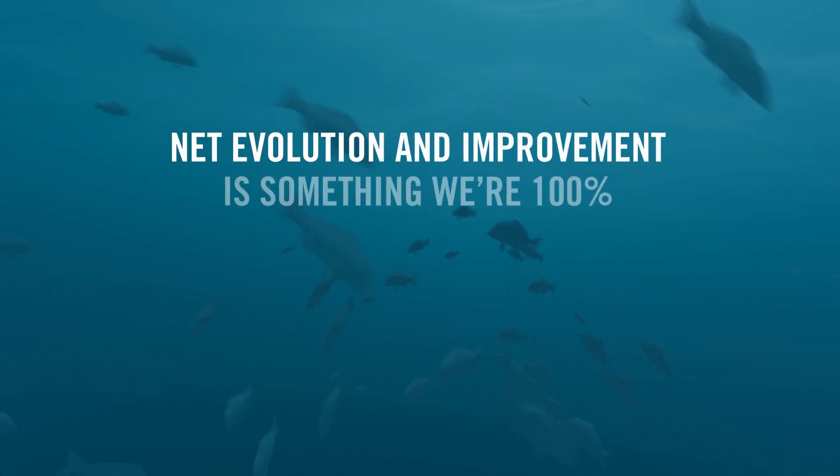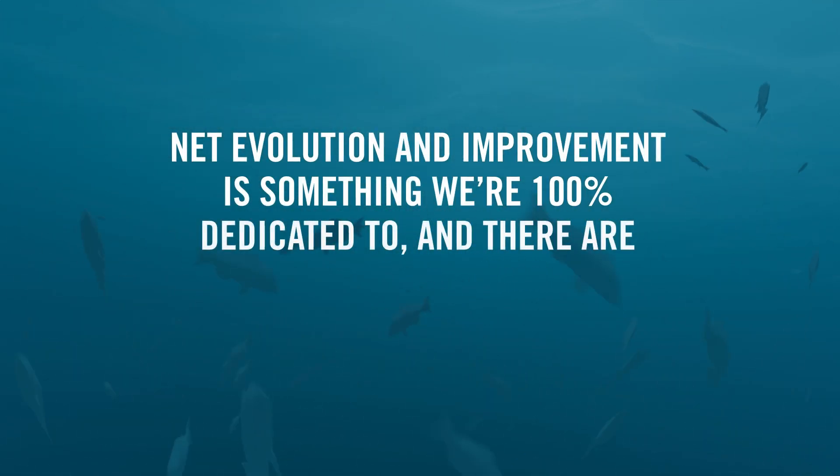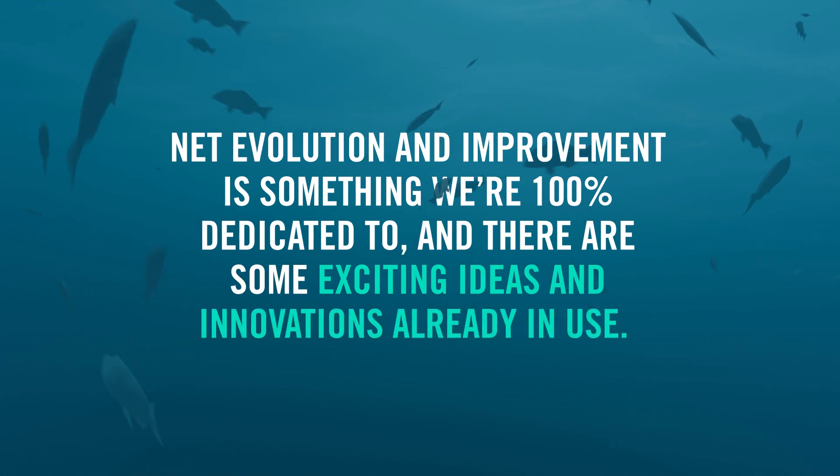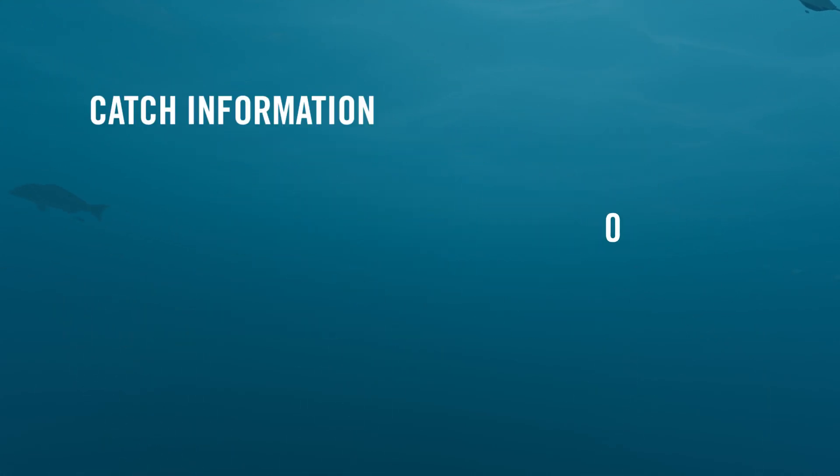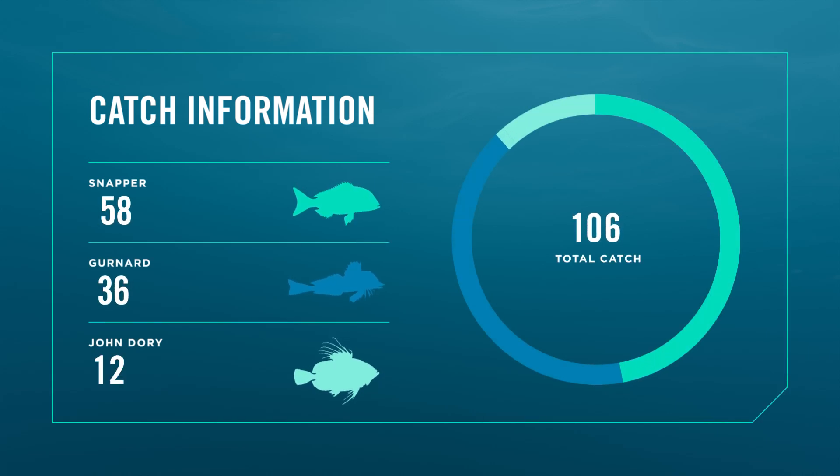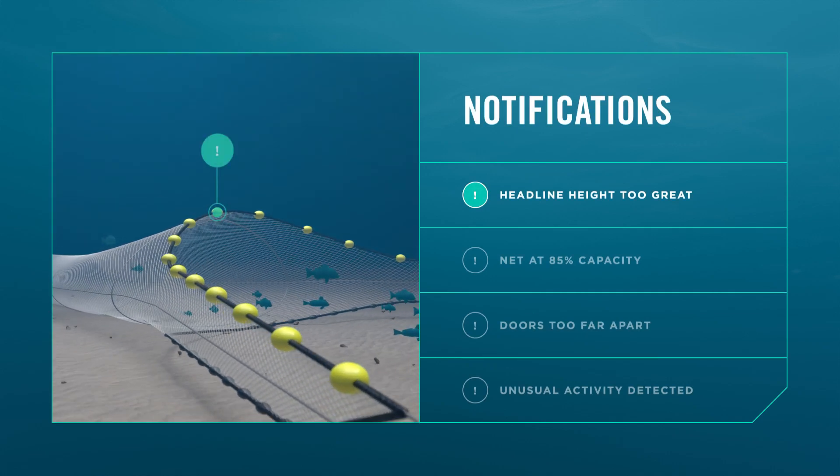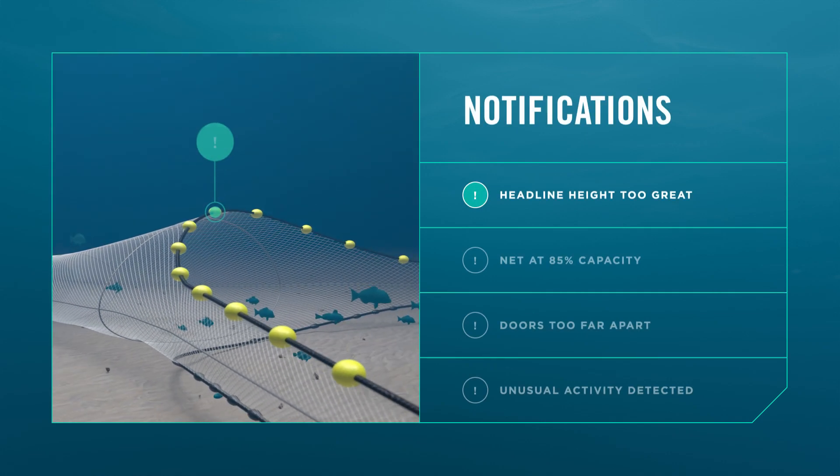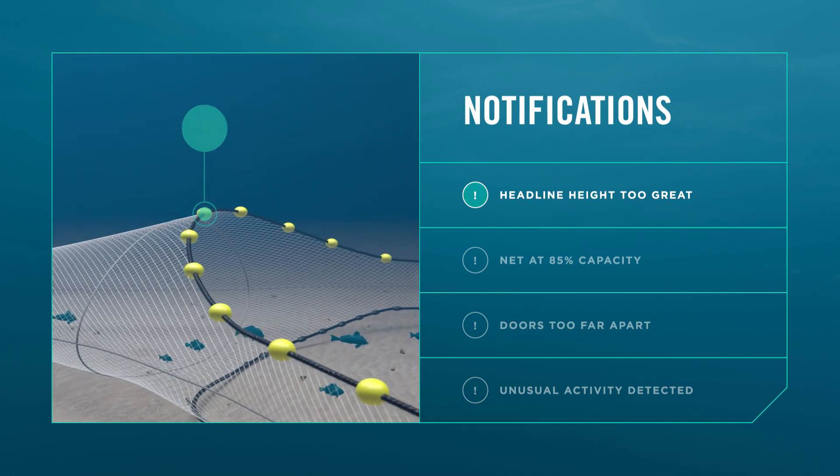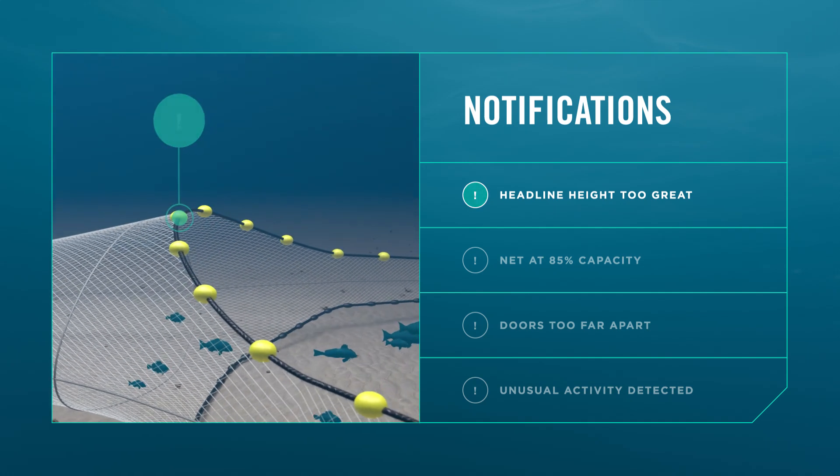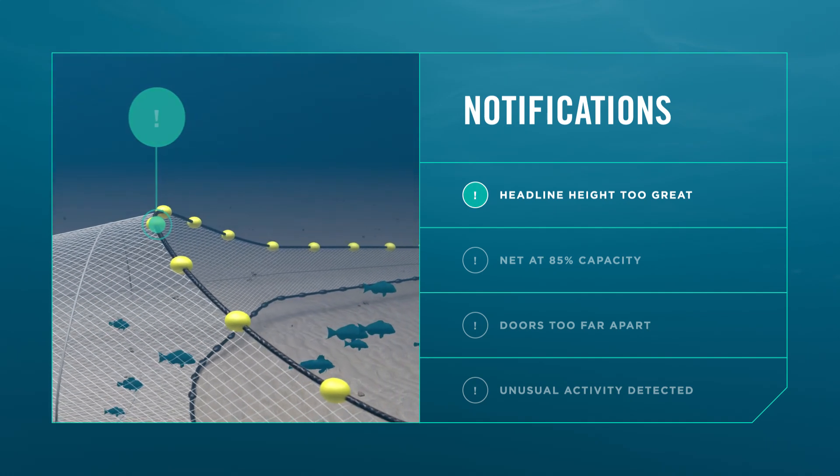Net evolution and improvement is something we're 100% dedicated to and there are some exciting ideas and innovations already in use. We're using net-mounted cameras and state-of-the-art technology to identify fish going into the net, giving real-time data of exactly what's in there. And using smart sensors attached to the net, we can receive information on its performance in live time, allowing us to spot issues and make adjustments to its configuration on the go.